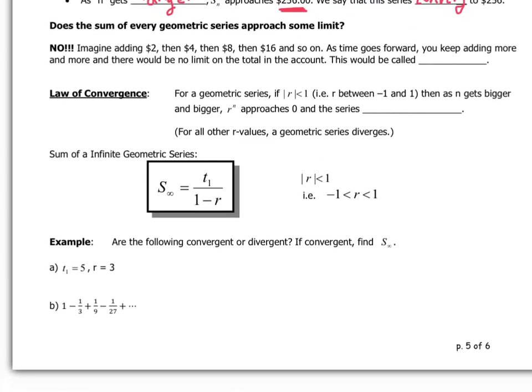Now, the next question here that we might ask is, does this always happen? Does every infinite series approach some limit? And the answer is no. We could imagine, say, adding $2 and $4 and $8 and $16 and so on to an account. As time gets forward here, you just keep adding more and more and more and more. There's no limit to the total in the account. Okay, we have a name for this. We call this divergent. Something's convergent when it approaches a value, like the 256 above, and something is divergent, like in this example, when it keeps going off and on to infinity and never stops.